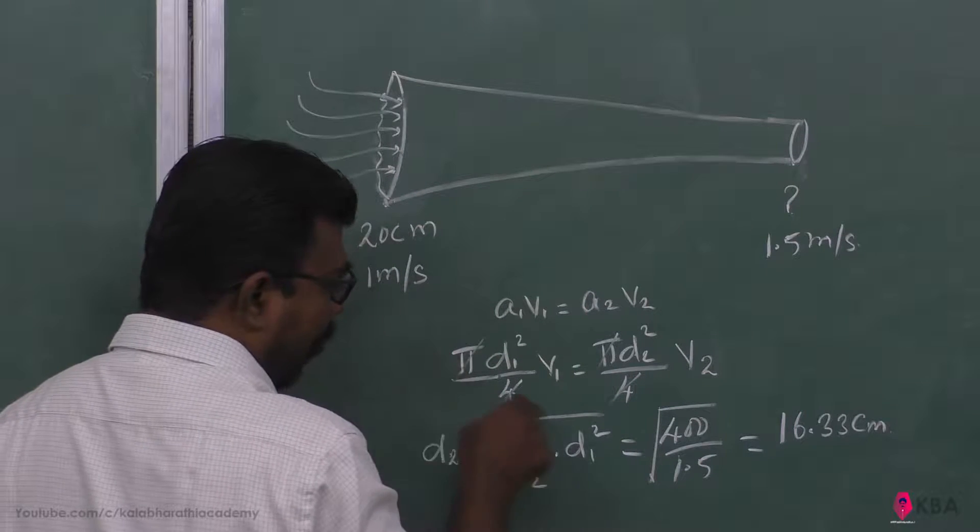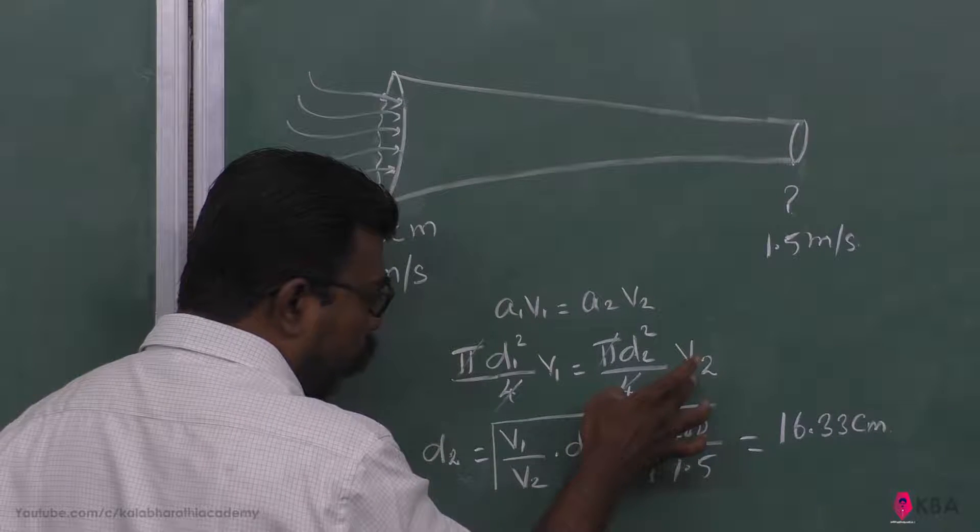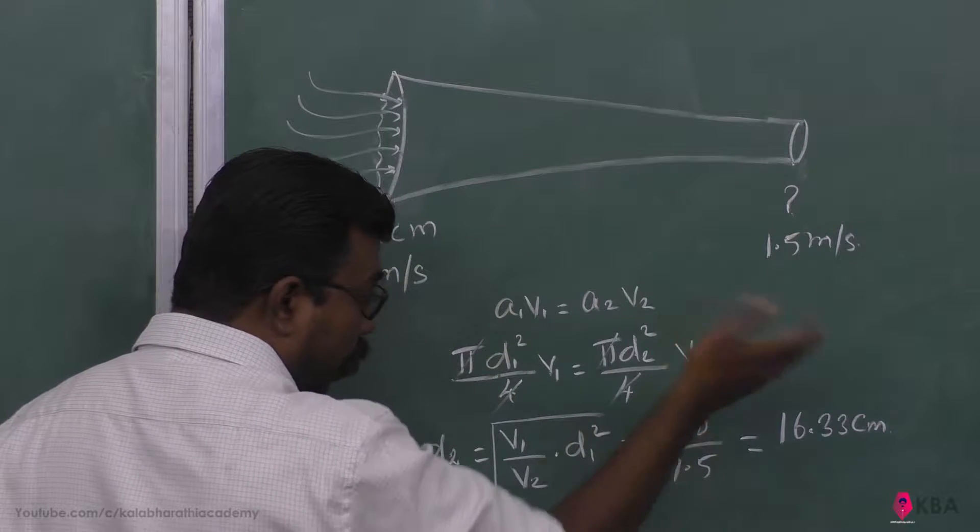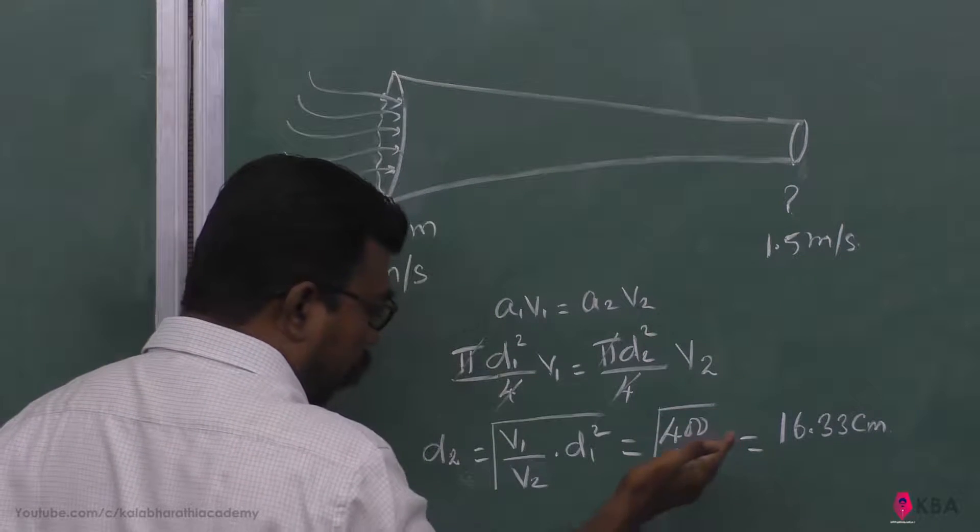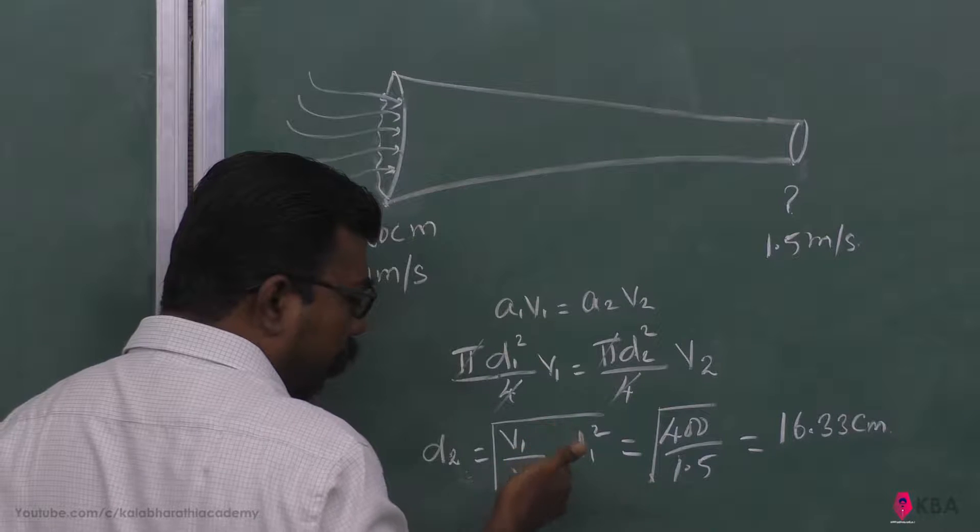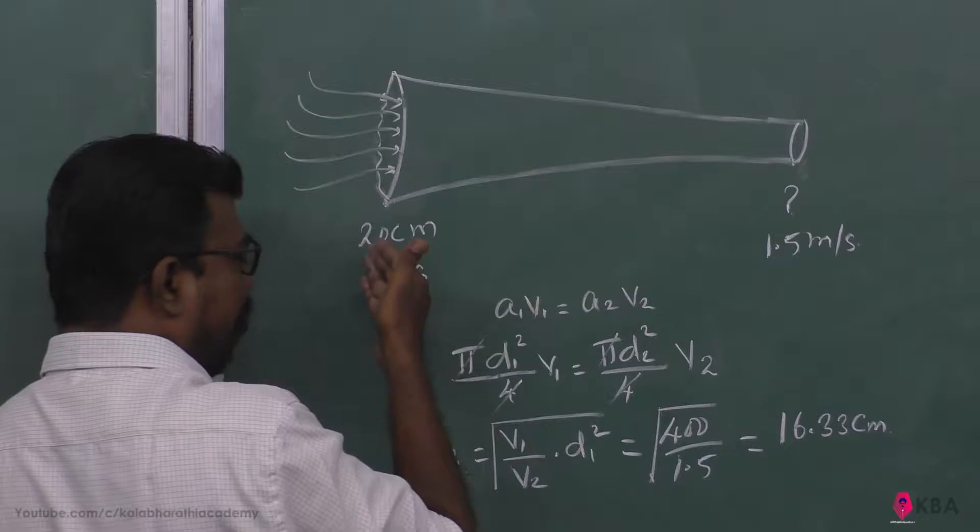So, cancel pi over 4. v2 is equal to a1 over a2 times v1, which equals pi d1 squared over 4 times v1 divided by pi d2 squared over 4. v1 is 1, v2 is 1.5, 1 divided by 1.5. d1 square is 400 over centimeter.